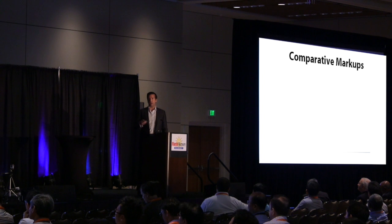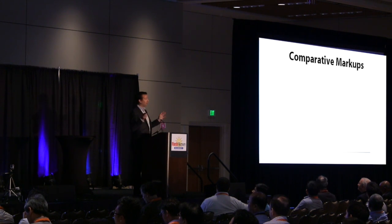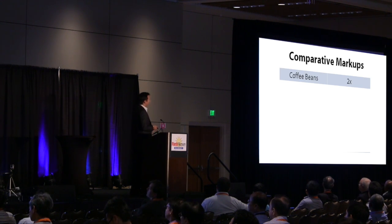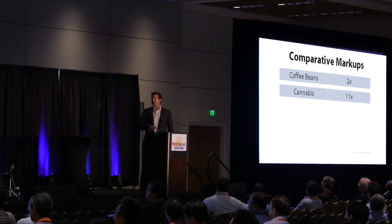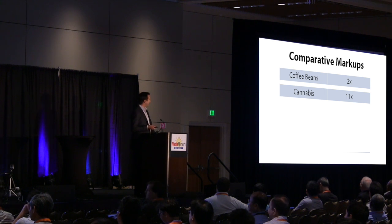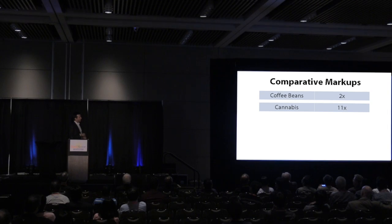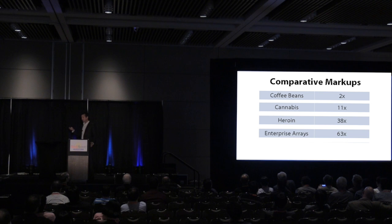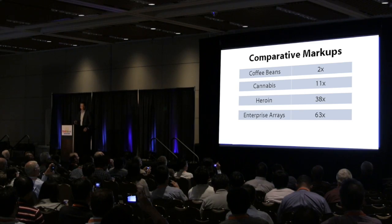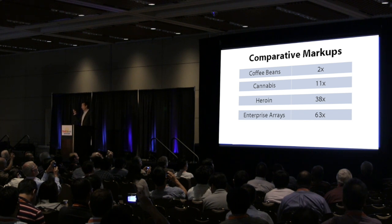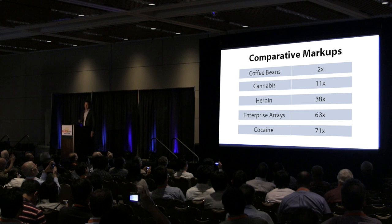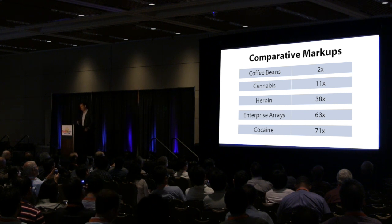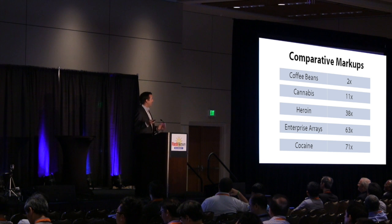63X is a pretty big markup. To put it in comparison: a coffee bean is marked up 2X, cannabis 11X, and then comes enterprise storage at 63X — only beaten by cocaine at around 100X. So we're slightly better than cocaine, or we're all drug addicts of a legal kind.